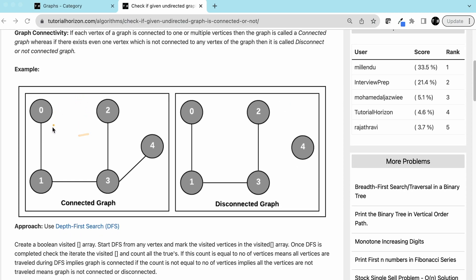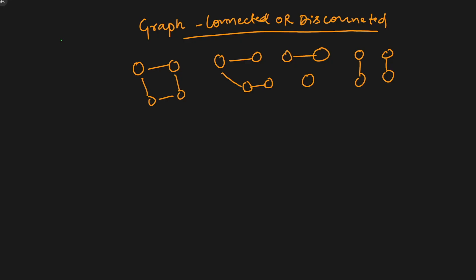Let's see one example. Here we can see that all the vertices are connected. Here we can see that vertex four is not connected to any of the other vertices. When we say the graph is connected, that means if you start traveling from any vertex, you will visit all the vertices, and if you can visit all the vertices, that means the graph is connected.